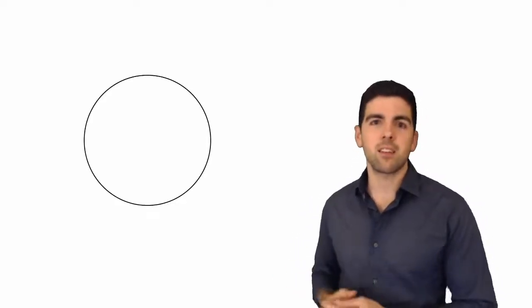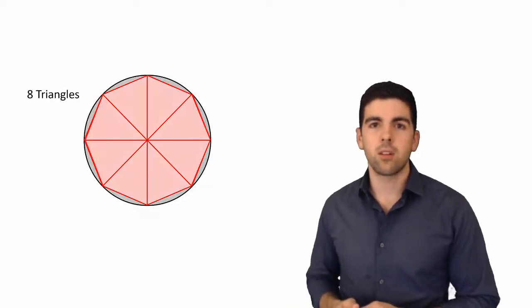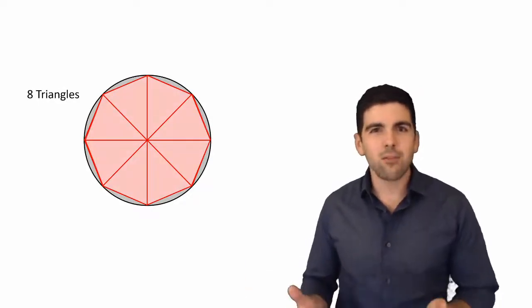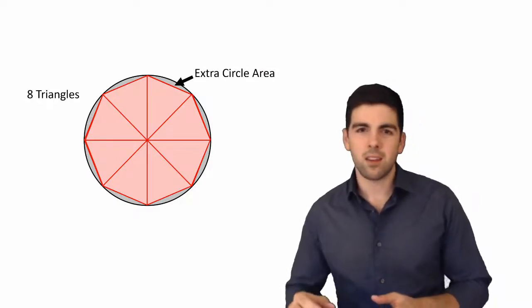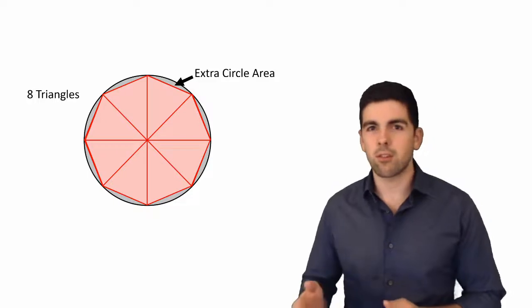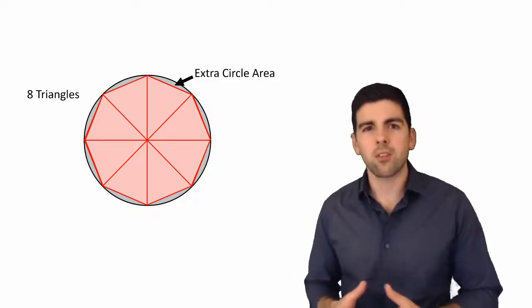So what he did was he said, well, we have a circle. What if we take eight isosceles triangles and we put them next to each other in a circle? Well you can see they kind of look similar, don't they? I mean they're not perfect but if you make the height of the triangle the radius or close to the radius of the circle you can see these become almost the same in area.